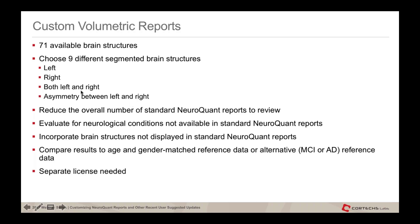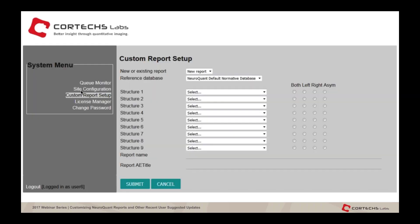The goal is to allow you to reduce the overall number of standard NeuroQuant reports — for example, combining the age-related and hippocampal asymmetry report. You can create AE titles for neurological conditions not currently supported with standard reports, create reports specific to a referring physician, or incorporate structures from the 71 available ones not on any standard report. All structures are age- and gender-matched to reference data, either normative or alternative. This requires a separate license — please contact us if interested.